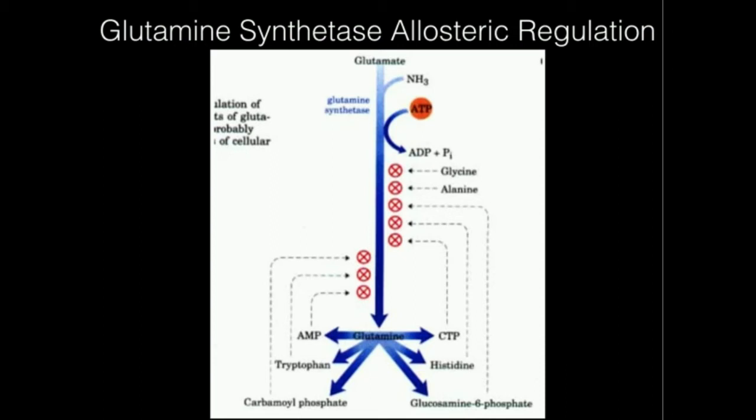Why is that important? Well, if we have tons of CTP, that's an indication that we already have tons of glutamine — CTP concentration is proportional to that of glutamine. So if we have tons of CTP, we don't need to make any more glutamine, so it makes sense that CTP would turn this enzyme off, considering the fact that it's also using up ATP. In addition, glycine and alanine, two other amino acids, can also inhibit glutamine synthetase.